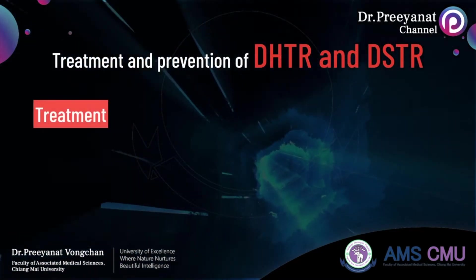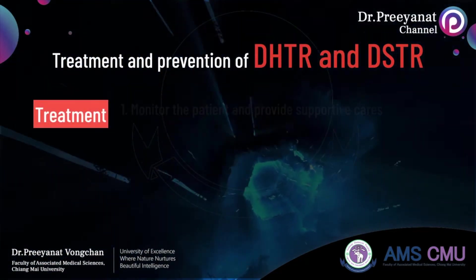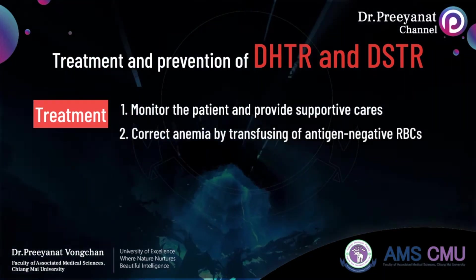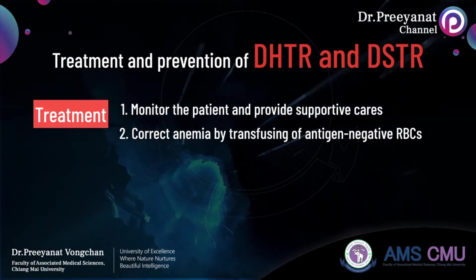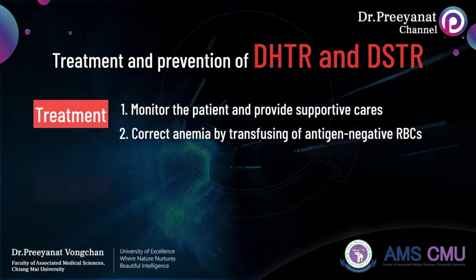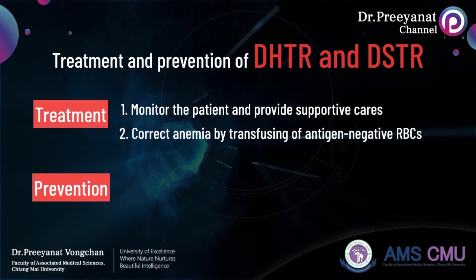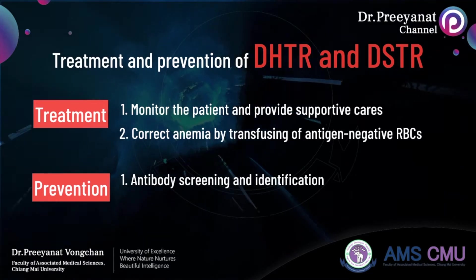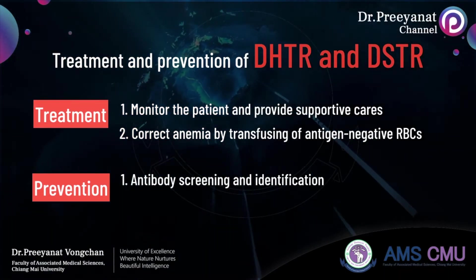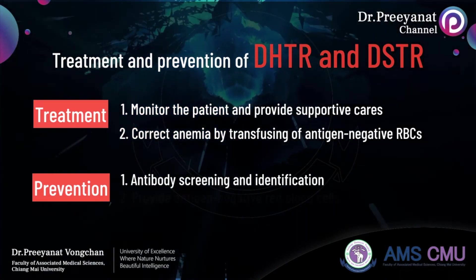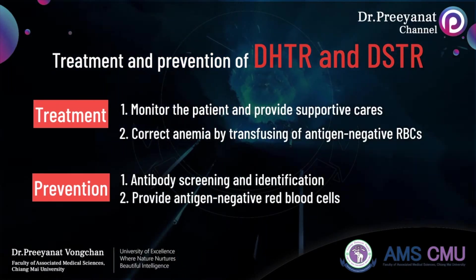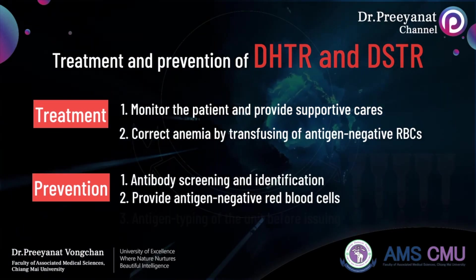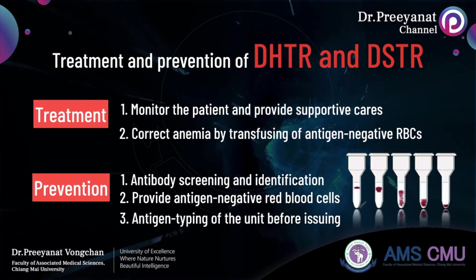Treatment of DHTR is mainly to monitor patients and provide supportive care. In cases of anemia, antigen-negative red blood cells are needed. Three steps to prevent DHTR and DSTR include: screen and identify the implicated alloantibodies and make a record; provide antigen-negative blood when red blood cells are needed; and once a compatible match is done, type the unit to ensure it is antigen-negative before issuing.